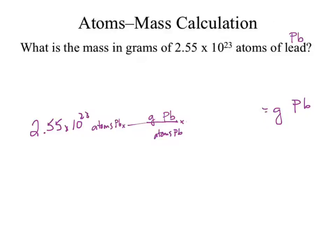We know what we want: grams of lead as our answer. We're starting with 2.55 times 10 to the 23rd atoms of lead. The atoms of lead need to cancel and I need grams of lead. Do I know the conversion factor between grams and atoms? No. What does the periodic table give me? Grams per mole. I'm in atoms — the periodic table didn't help me directly.